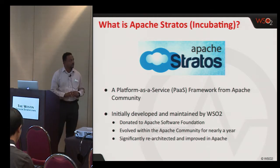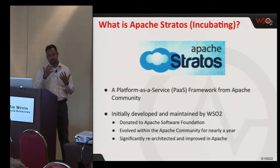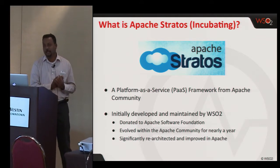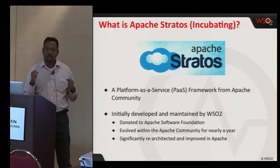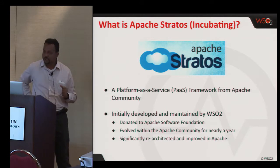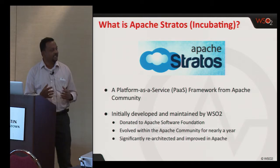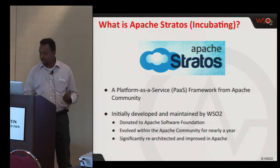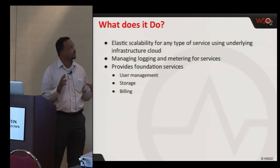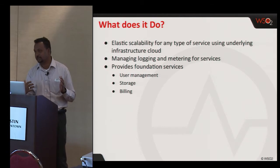As I mentioned, Apache Stratos is an incubating project. Initially, Stratos was developed by WSO2, but about a year ago WSO2 donated this to Apache, and this project has been evolving in the Apache community for the last year or so. It has gone under major re-architecture within the Apache community. It is basically a platform as a service framework capable of elastically scaling any service type on top of theoretically any infrastructure as a service.